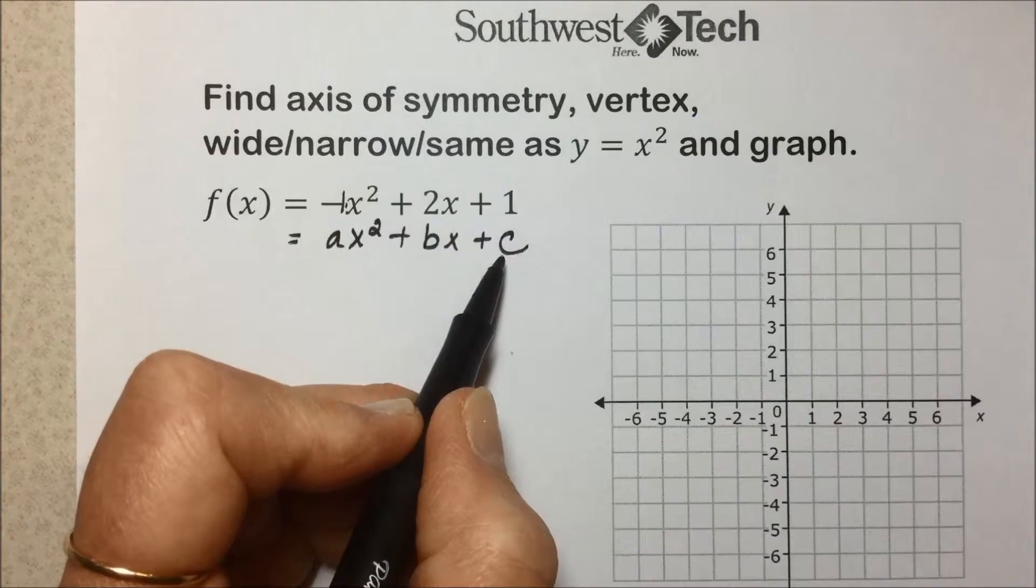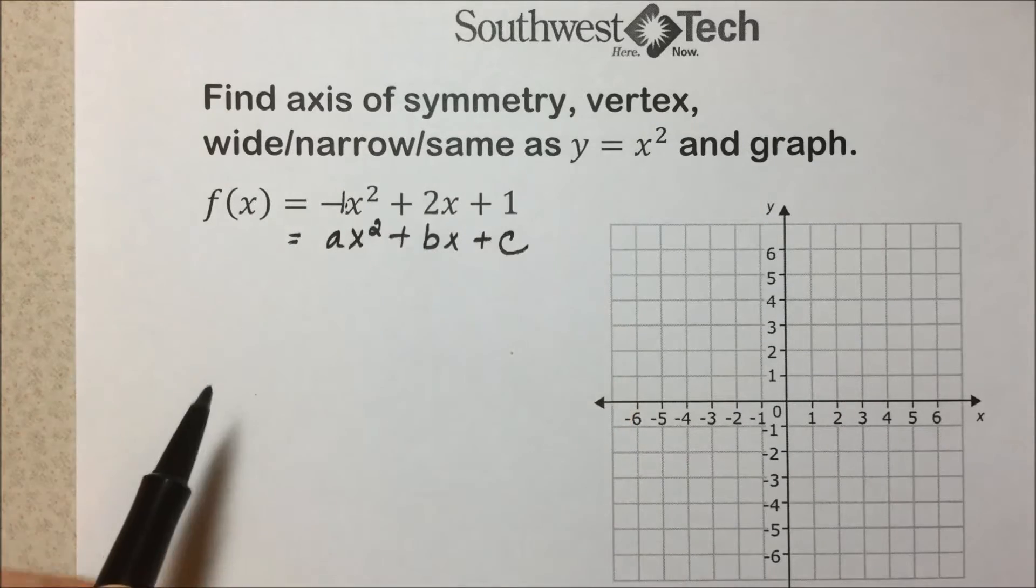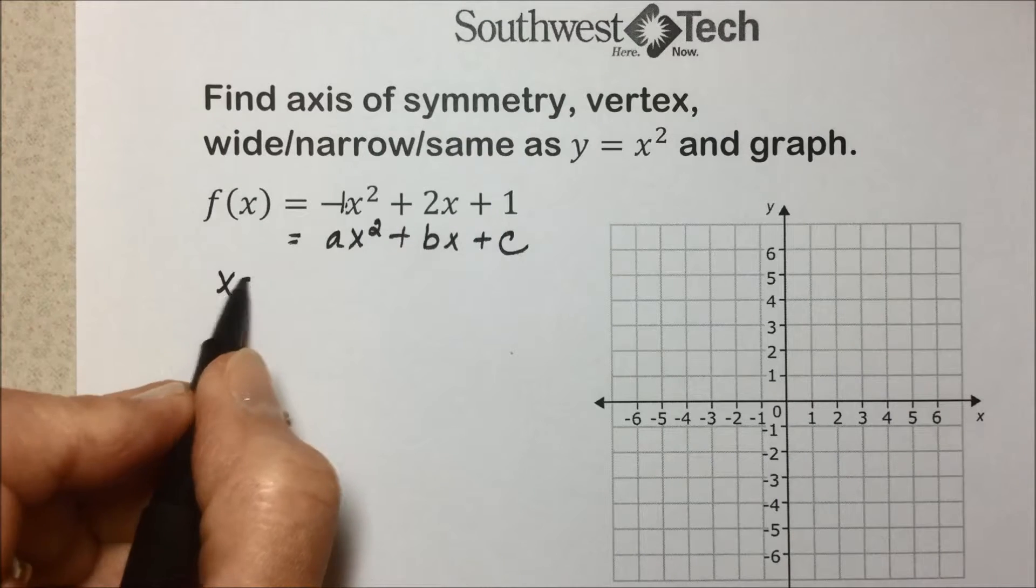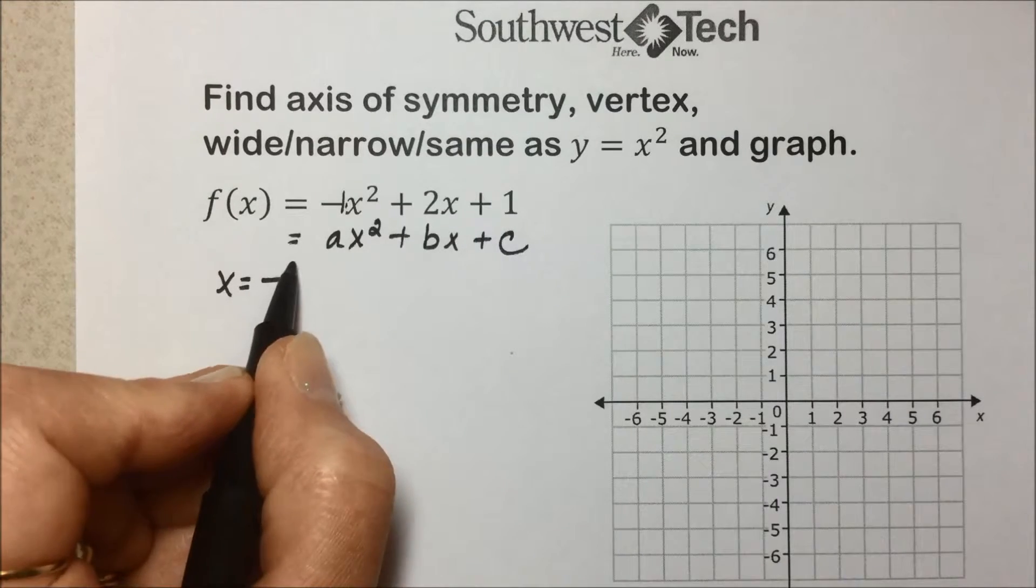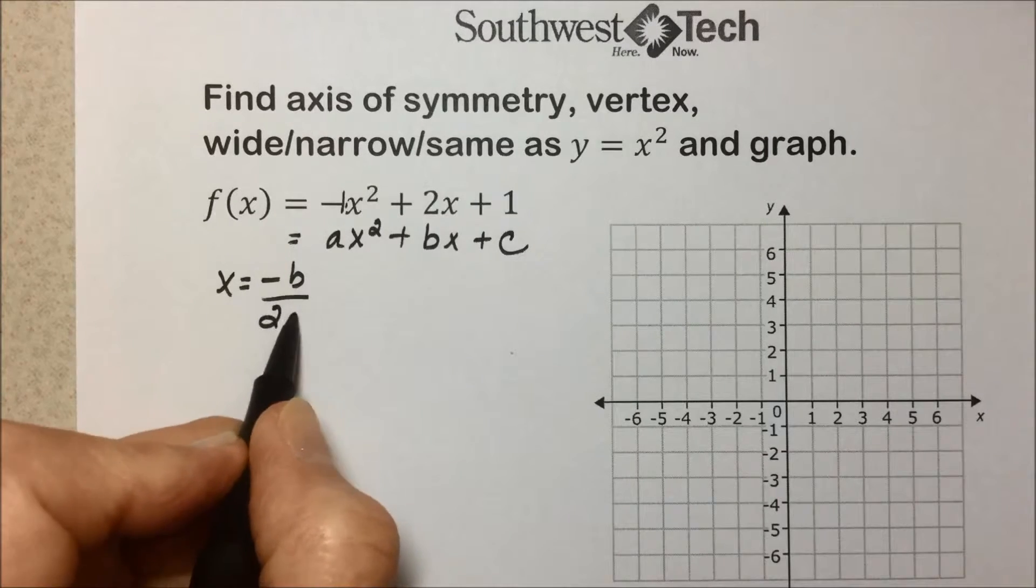b is 2, and c is 1. So to get our axis of symmetry and on our way to the vertex, we need to know the value of -b/2a.